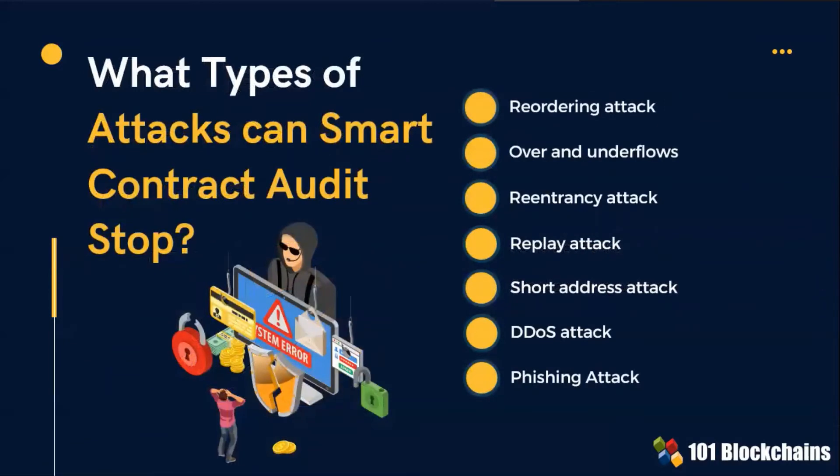What types of attacks can a smart contract audit stop? A smart contract audit can stop several severe attacks, such as reordering attack, reentrancy attack, distributed denial of service attack, or DDoS attacks, and phishing attack.